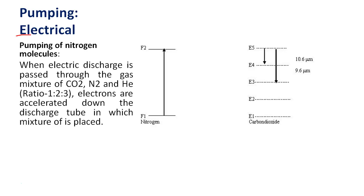Pumping: Electrical pumping is used in carbon dioxide laser. When electric discharge is passed through the gas mixture of CO2, nitrogen and helium mixed in ratio 1:2:3, electrons are accelerated down the discharge tube in which the mixture is placed.